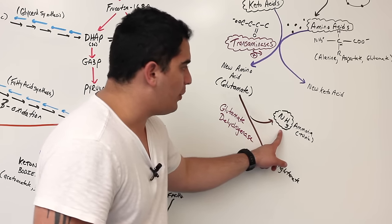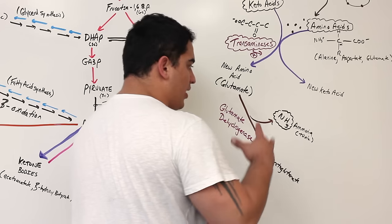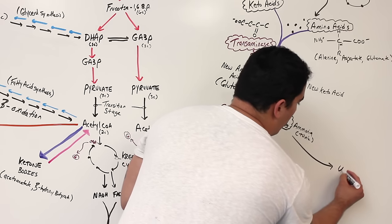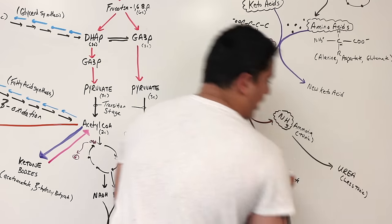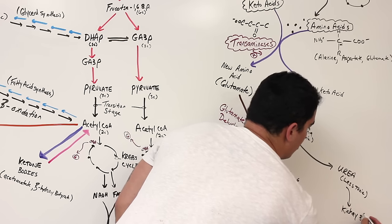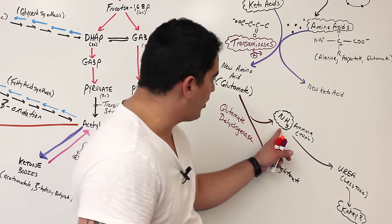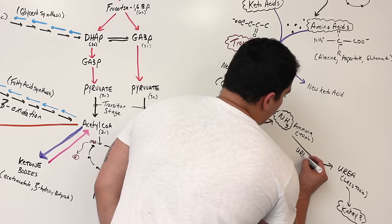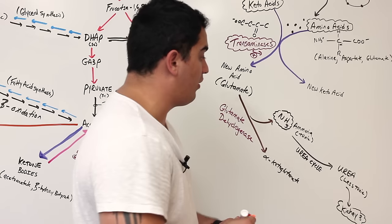This ammonia, since it's toxic, we don't want it to stay in the body in that form — we want to get rid of it in another form. So we take this ammonia in the liver and convert it into a molecule called urea, which is still toxic but a lot less toxic. This urea will then go to the kidneys and be excreted. What is this called whenever I convert ammonia into urea? This is called the urea cycle.